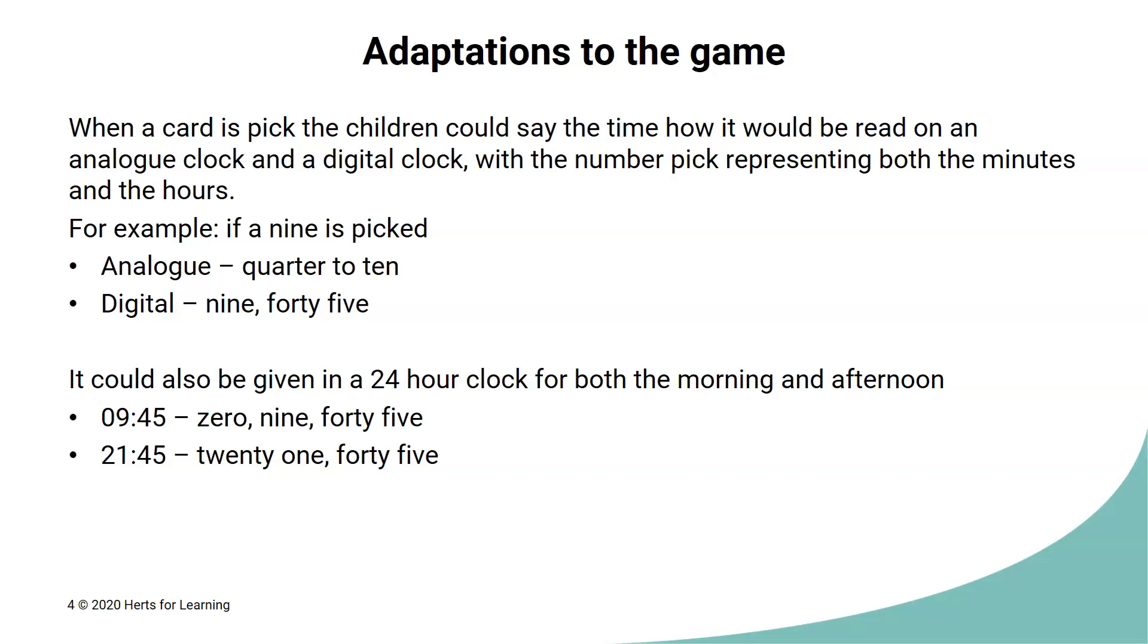To take it one step further, you could also link this to the 24-hour clock and they could say what that time represents for both the morning and the afternoon. So if we had our nine again, in the morning, it would be 0.9.45 or 9.45. In the evening, it would be 21.45. So this is how you could adapt the game even further.